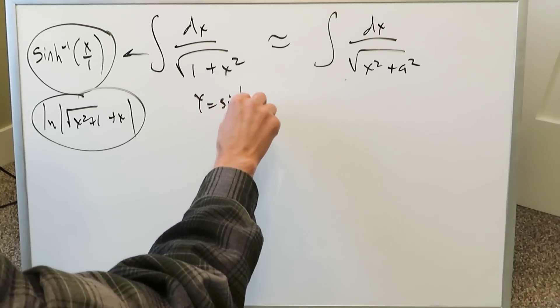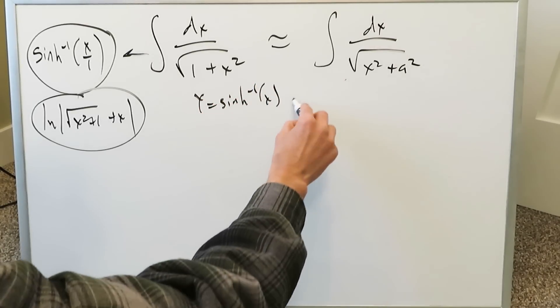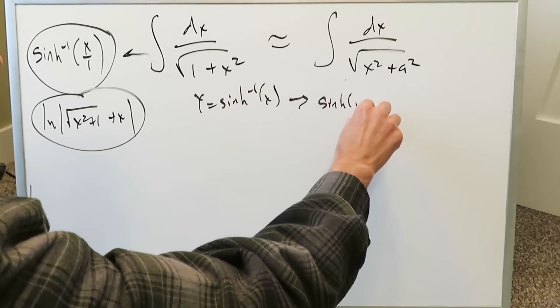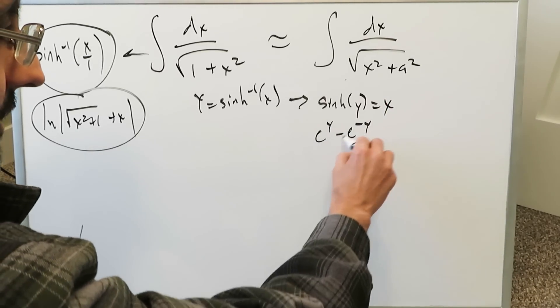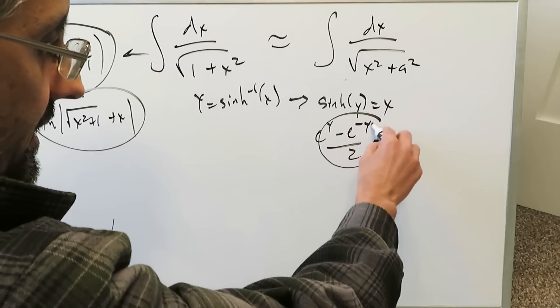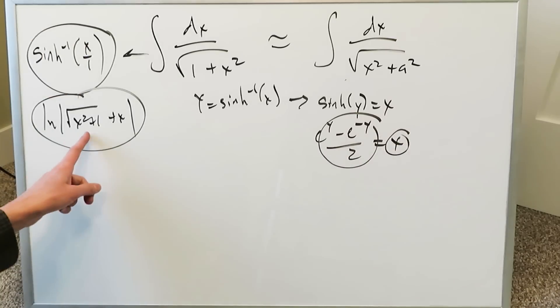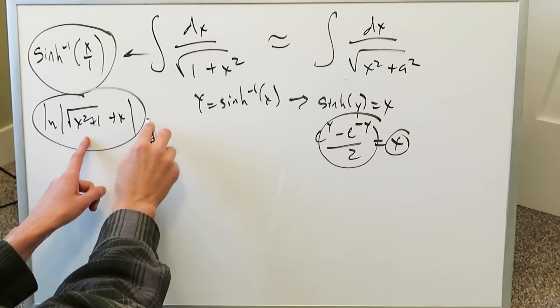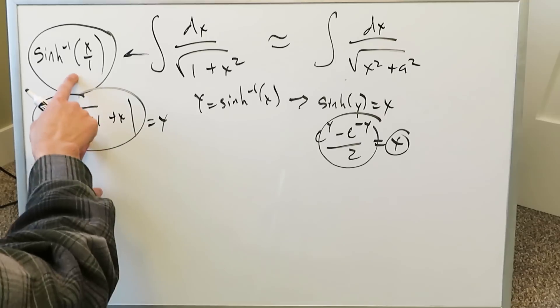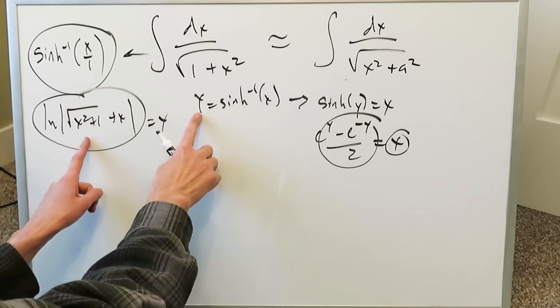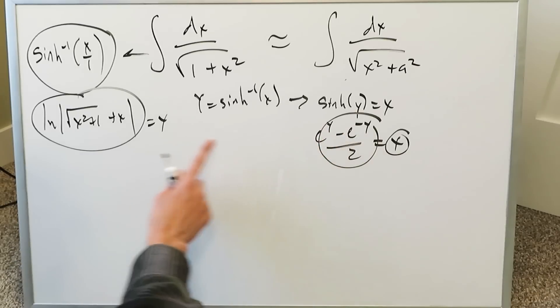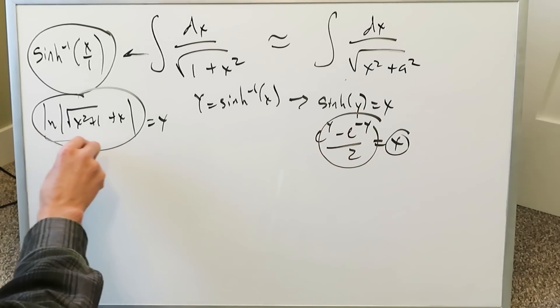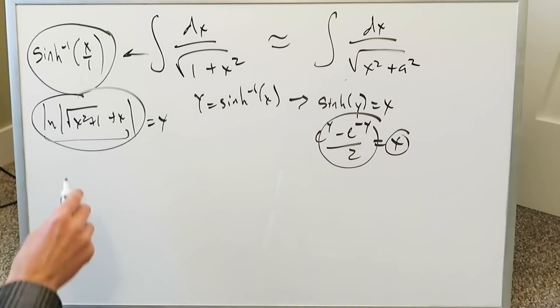I have y is equal to inverse hyperbolic sine of x, which becomes sinh y is equal to x, which becomes e to the y minus e to the minus y over 2 is equal to x. I know this right here is equal to x. What am I seeing over here? I'm seeing everything over here is equal to y, because this is a function. This right here is a function. Each of these individually was equal to y, which is your function. But if y is equal to all of this, and I'm seeing y's over here, I can substitute this entire expression right here into all the places of y's.